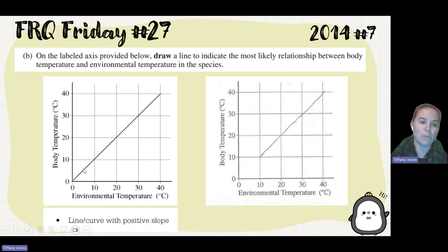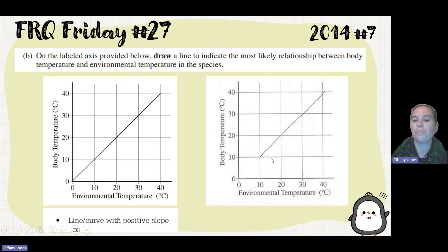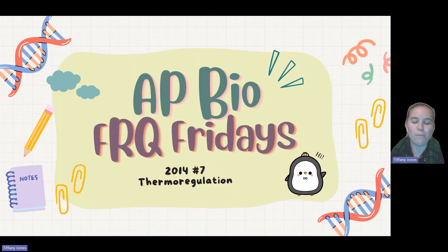And so it should look like this, where I've got this linear line going up, or the line with a positive slope. And here's a student's graph — they got that point. Hope that was helpful. Remember, AP Bio is a success for all.